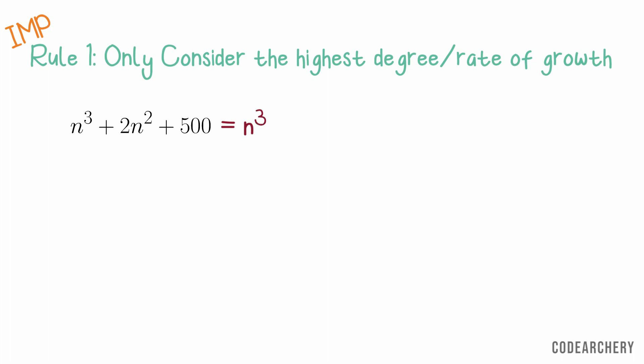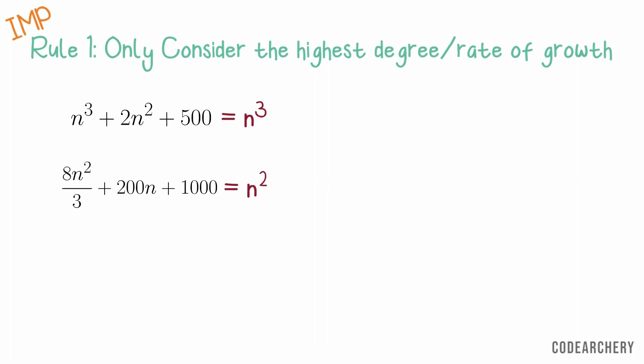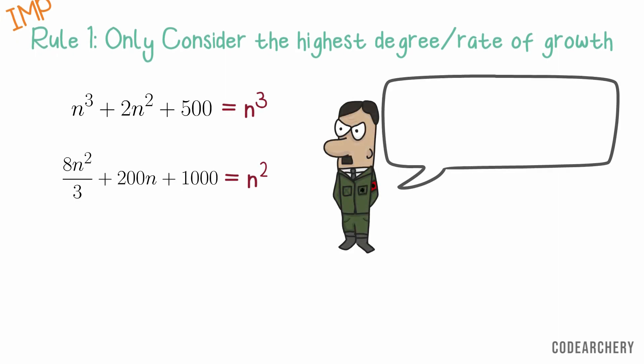For another example, let's say f of x is equal to 8n square by 3 plus 200n plus 1000 is equivalent to n square. So we are gonna say that the time complexity of this equation is n square. So this rule basically says that we only consider the highest degree of the expression and we neglect the remaining equation.